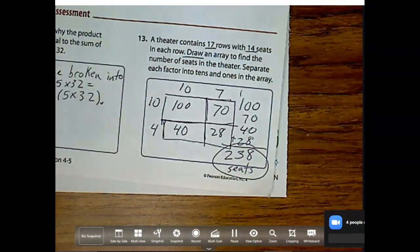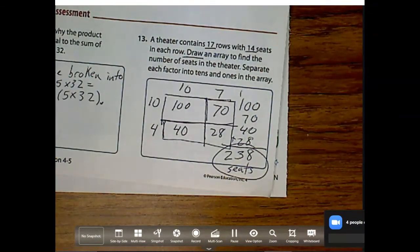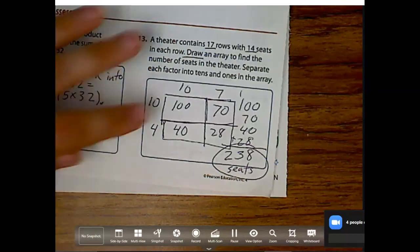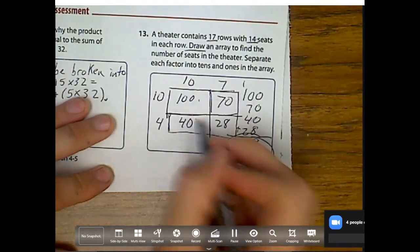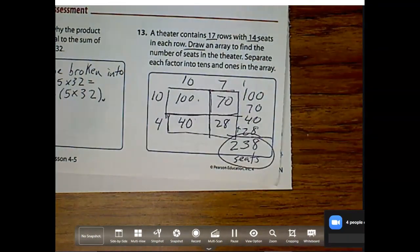I'll put that circle around. So that is it for partial products and arrays. Just remember, you're drawing a box, and then you're breaking that box into how many place values you have. So if I have 1, 2, 3, 4 total place values, then I should have 4 total boxes. Good job, guys.